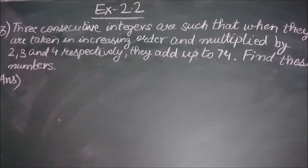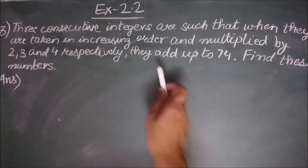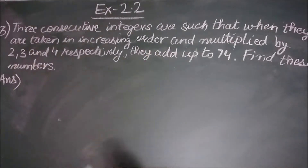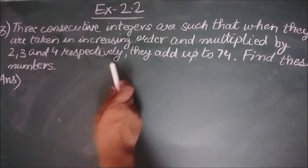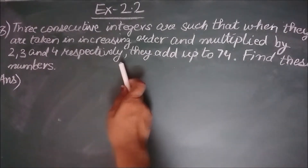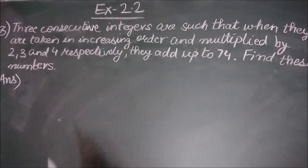Exercise 2.2, question number 8. Three consecutive integers are such that when they are taken in increasing order and multiplied by 2, 3 and 4 respectively, they add up to 74. Find these numbers.